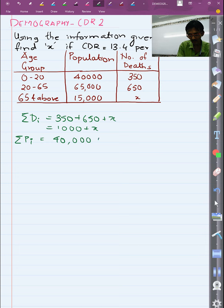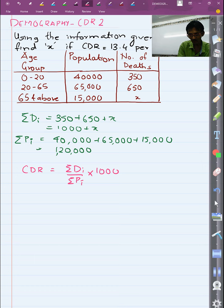Total population is 40000 plus 65000 plus 15000. If we add them up we get 120000. So as per our last formula, the CDR is nothing but summation DI over summation PI into 1000. CDR we are given 13.4. Summation DI is 1000 plus X over 120,000, into 1000. We cancel the three zeros.